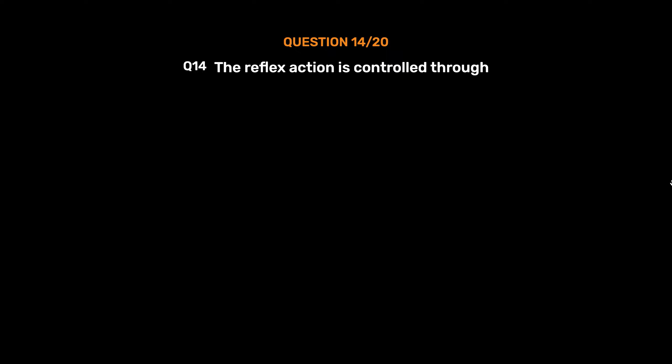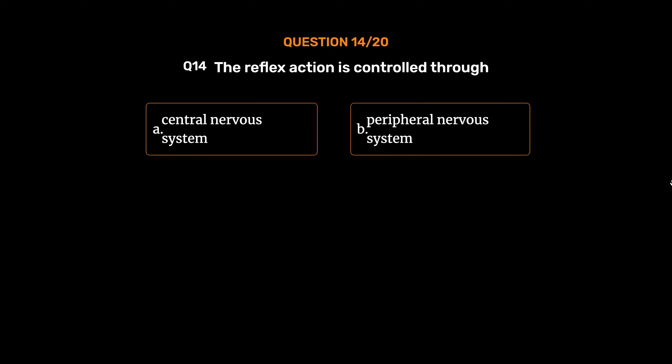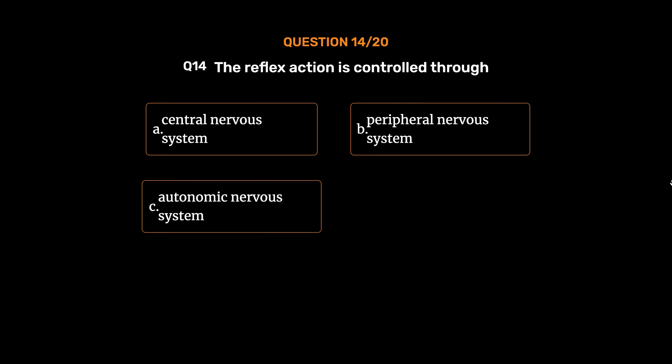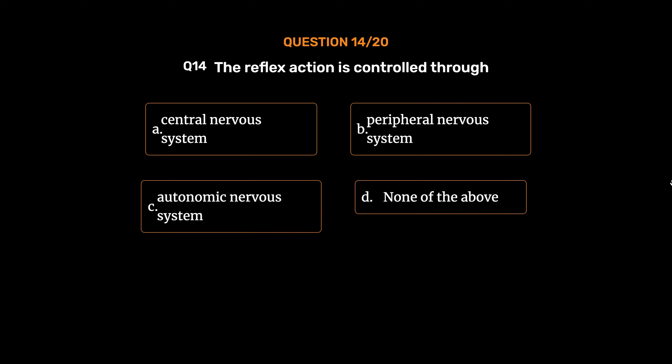Question number 14. The reflex action is controlled through: Option A: Central nervous system. Option B: Peripheral nervous system. Option C: Autonomic nervous system. Option D: None of the above. The correct answer is Option A: Central nervous system.